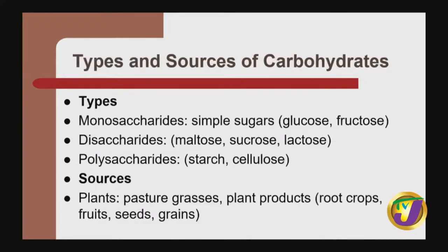There are three types of carbohydrates: monosaccharides — for example, simple sugars such as glucose; disaccharides, for example maltose; and polysaccharides such as starch and cellulose. From plant sources, we get carbohydrates from pasture grasses and plant products such as root crops, fruits, seeds, and also grains.